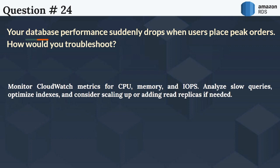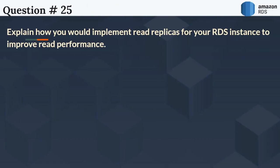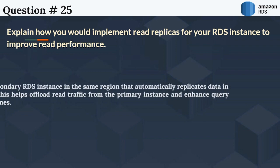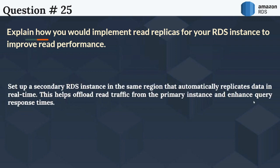The next question is: Explain how you would implement read replicas for your RDS instance to improve read performance. Set up a secondary RDS instance in the same region that automatically replicates data in real time. This helps offload read traffic from the primary instance and enhance query response times.